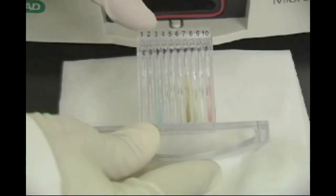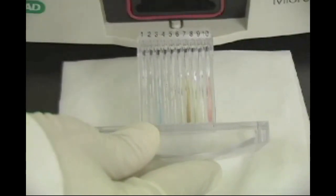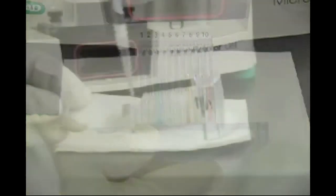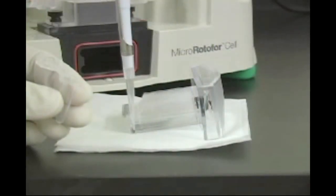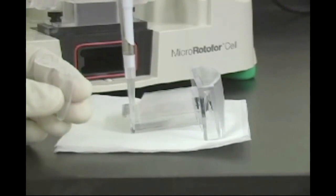Each compartment in the tray is numbered. Transfer the fractions to microtubes or other containers with a syringe or pipette.